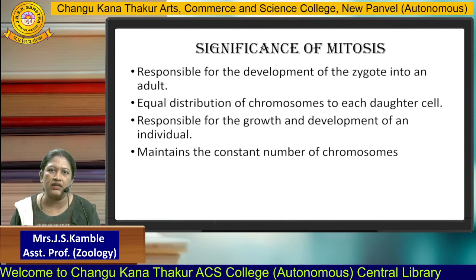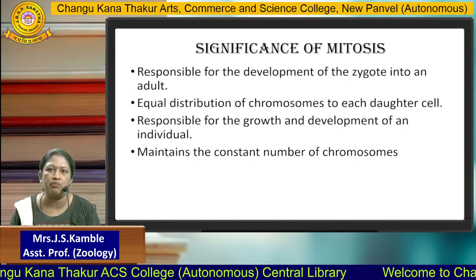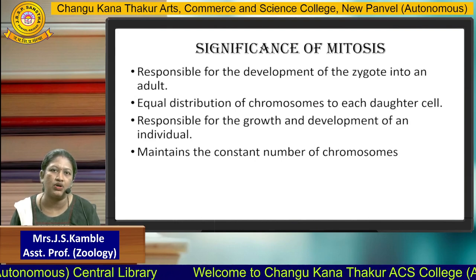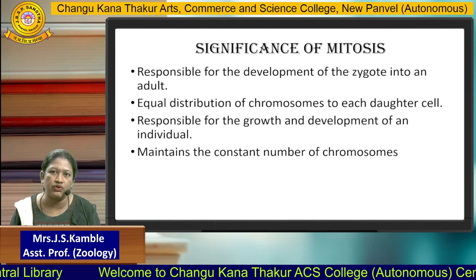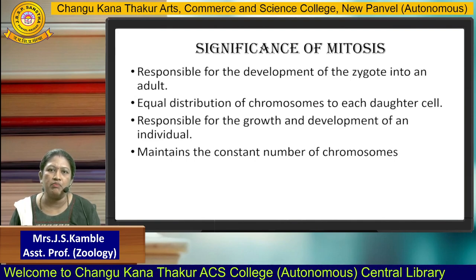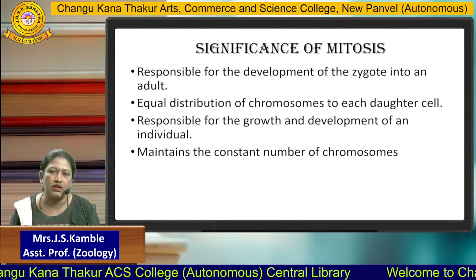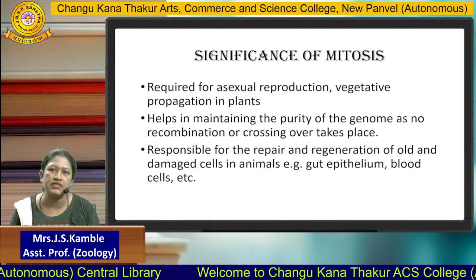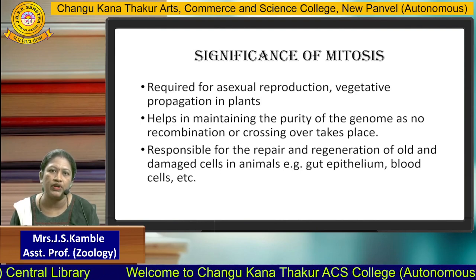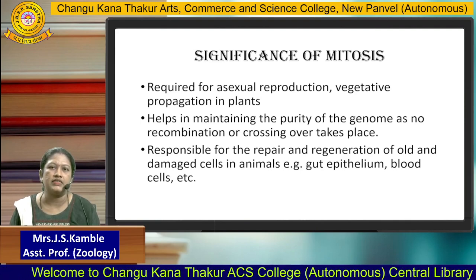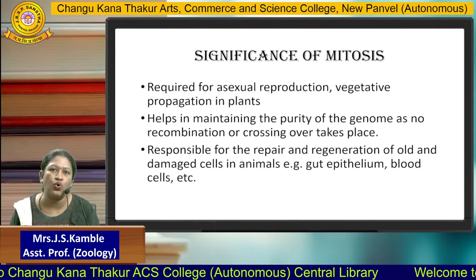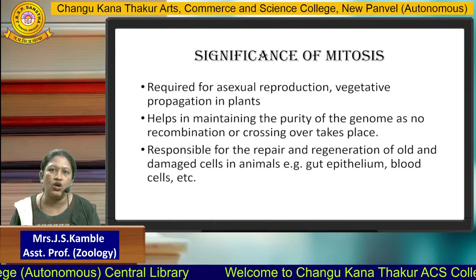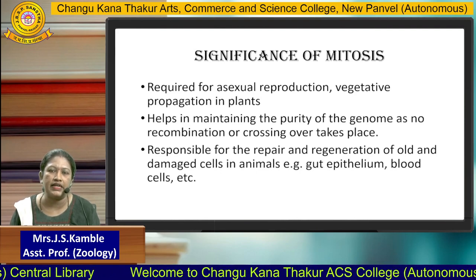Mitosis is responsible for the development of the zygote into an adult. It ensures equal distribution of chromosomes to each daughter cell. It is also responsible for the growth and development of an individual. It maintains the constant number of chromosomes. It is required for asexual reproduction, such as vegetative propagation in plants. It also helps in maintaining the purity of the genome, as no recombination or crossing over takes place. It is responsible for the repair and regeneration of old and damaged cells in animals — such as gut epithelium and blood cells. Overall, mitosis is required for the development of an organism.